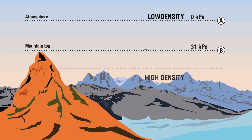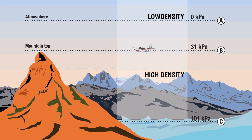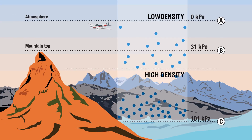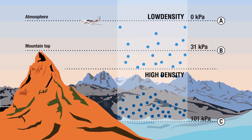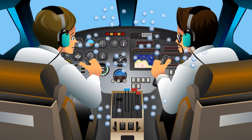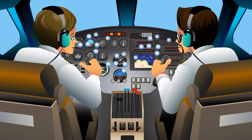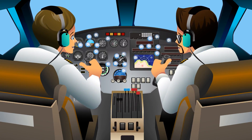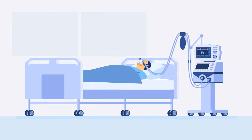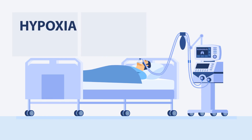As altitude increases, the amount of gas molecules in the air for each breath decreases as there is less pressure. This means there is less oxygen in the atmosphere per breath of air. The lack of oxygen in the human body causes a medical condition called hypoxia, which can be fatal.